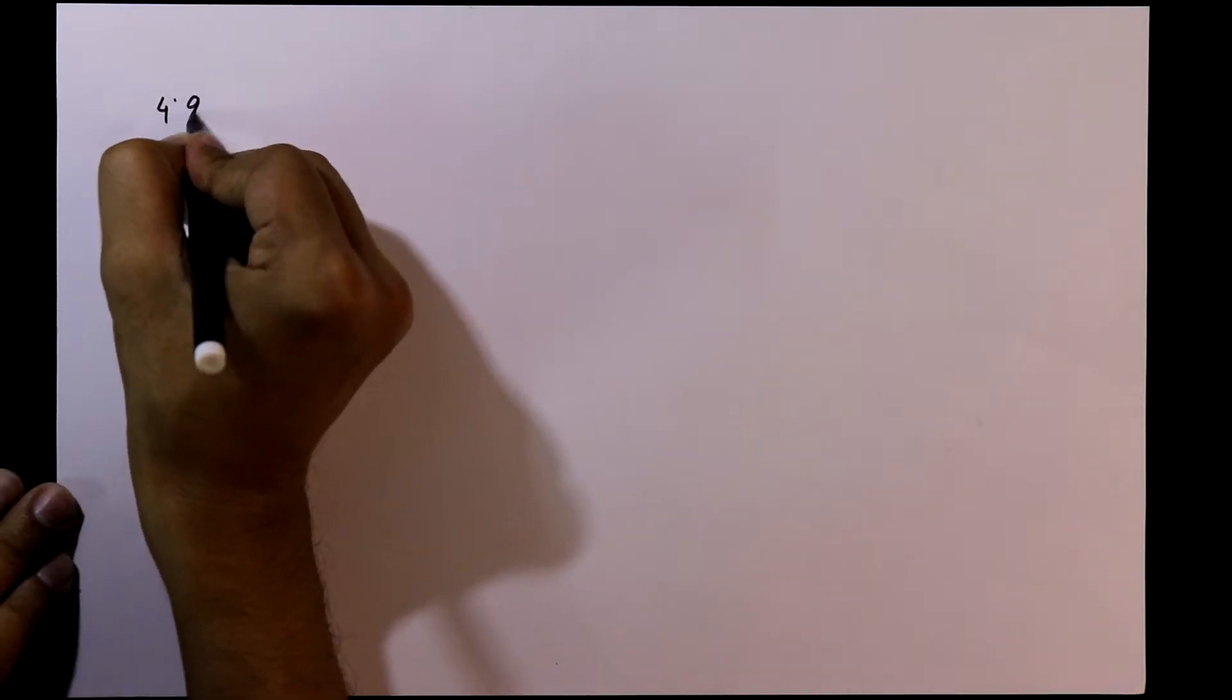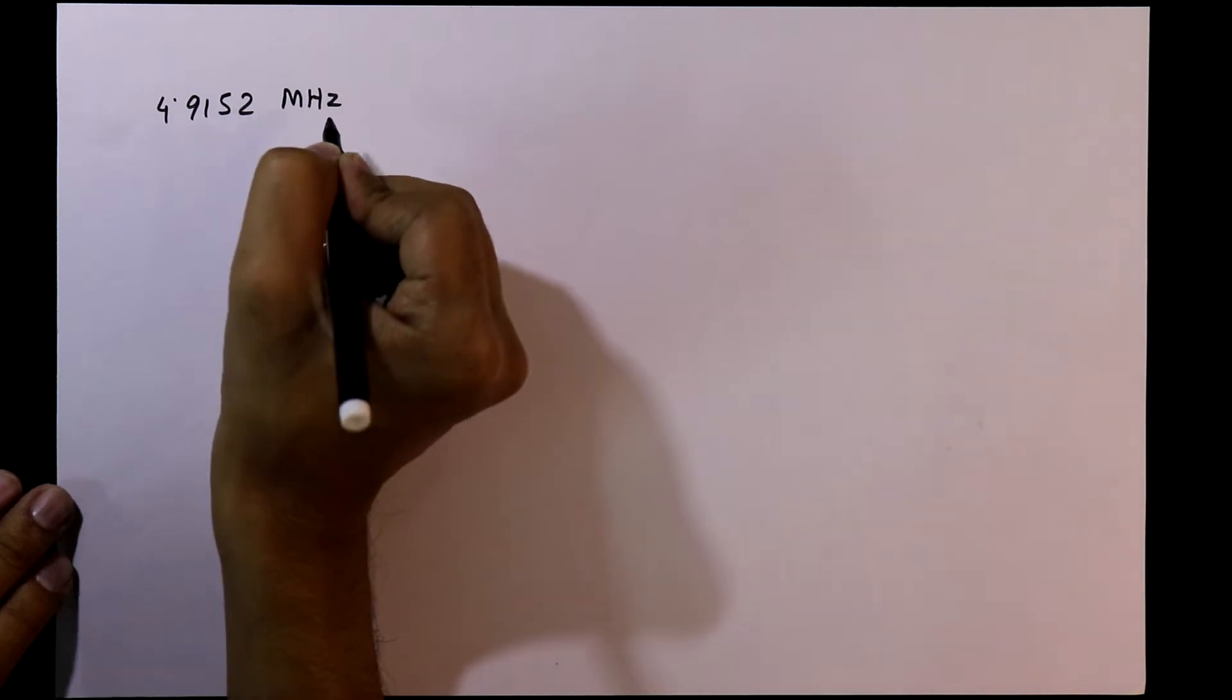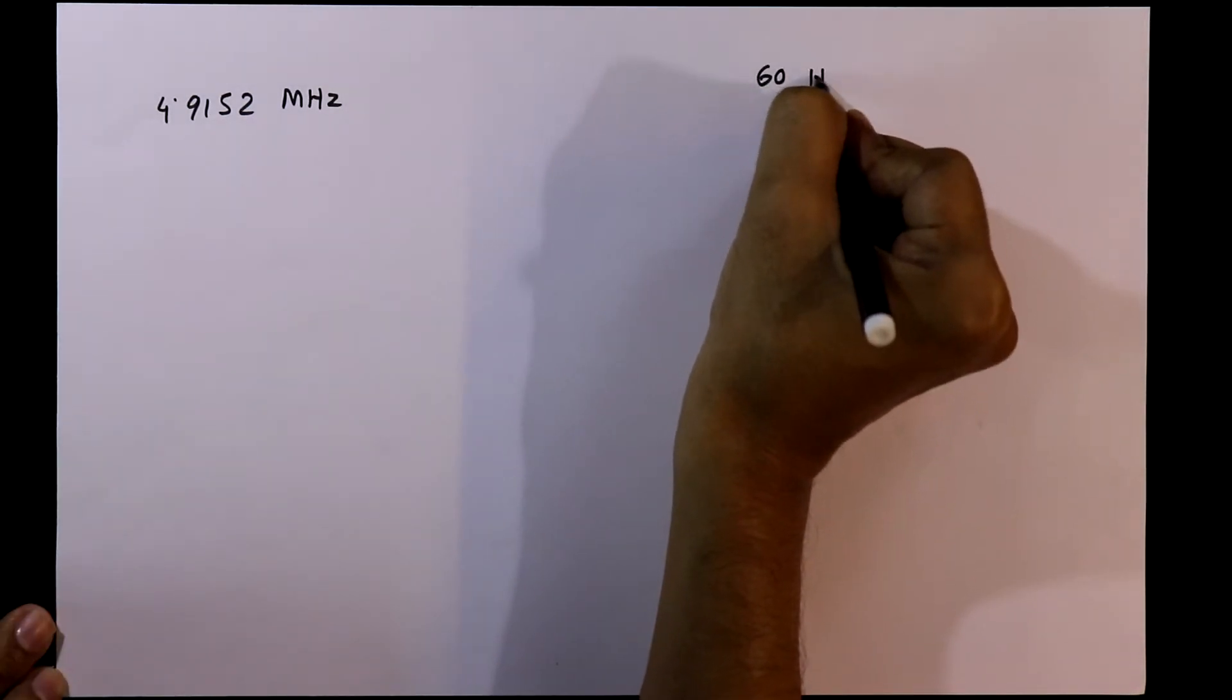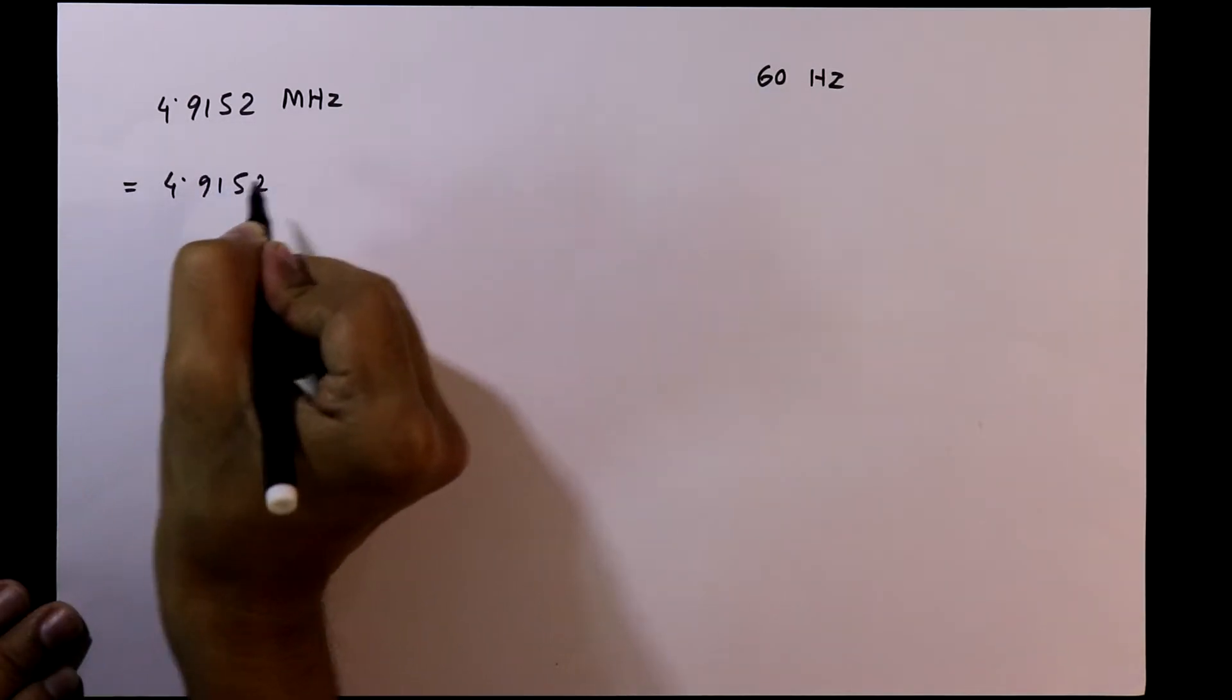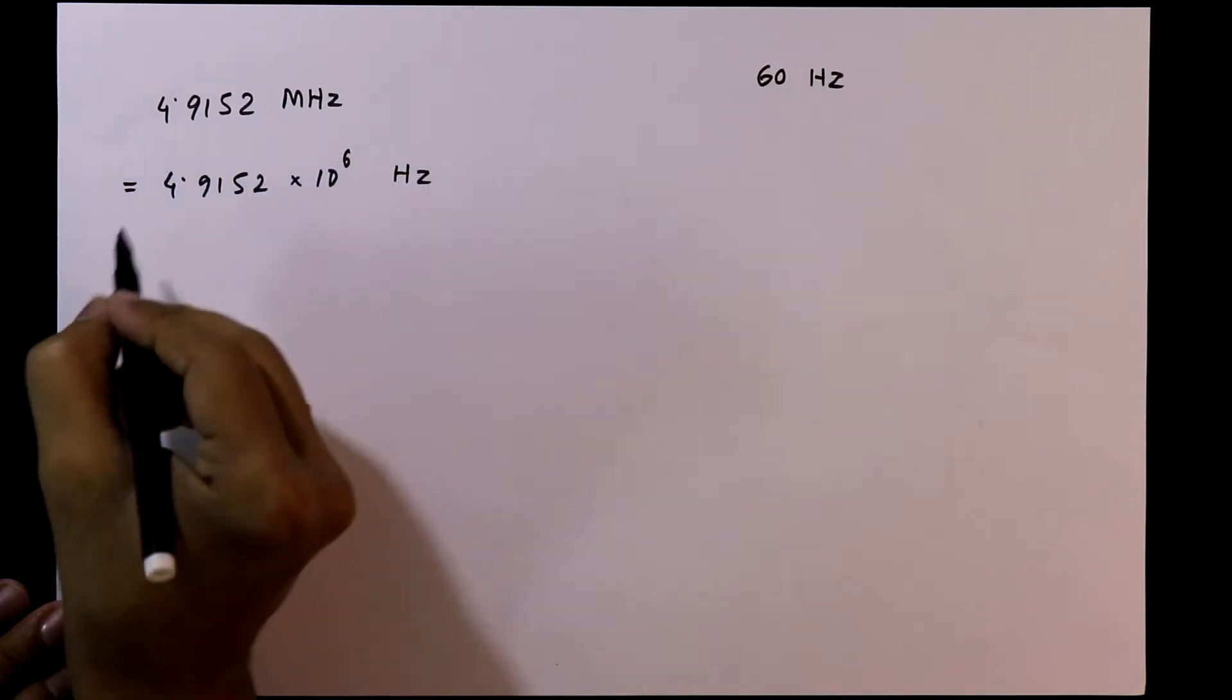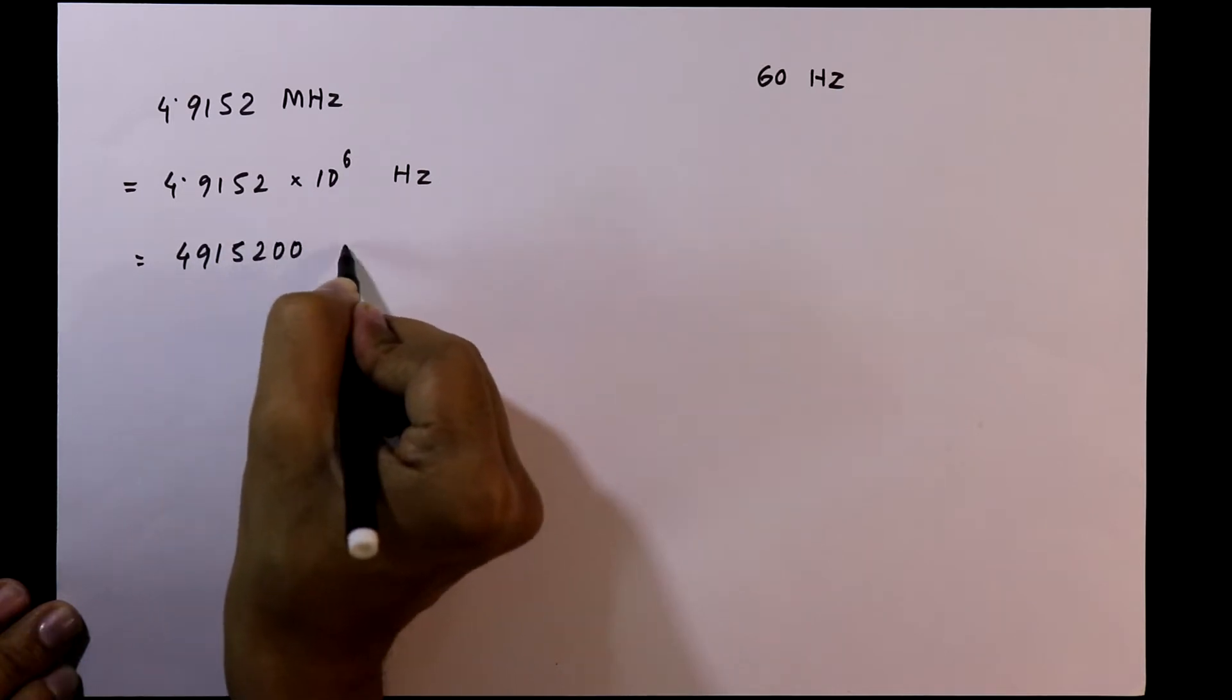We are going to use a 4.9152 megahertz crystal oscillator and we need 60 Hertz of frequency. Now this we can write as 4.9152 multiplied by 10 to the power 6 Hertz, and this is equal to 4915200 Hertz.